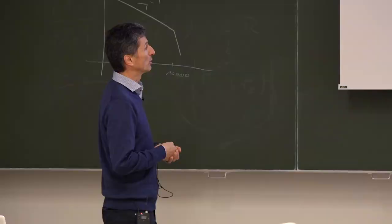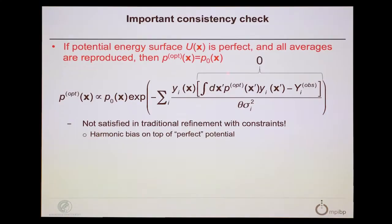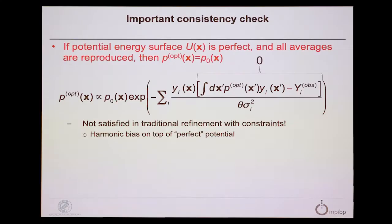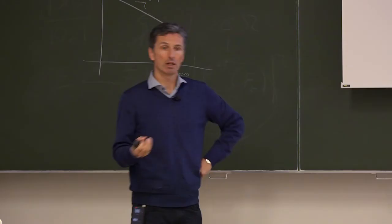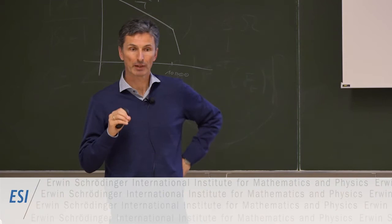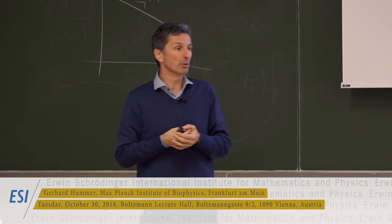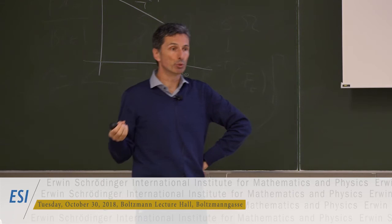One important point before discussing ways of sampling: this is a very nice result — if the prior distribution is exact, that is, if it already leads to averages in full agreement with the experimental observation, we do get back the prior. This may seem trivial, but many other ensemble optimization techniques do not do this because they add additional bias on whatever input you take. So this was a very nice result for us.